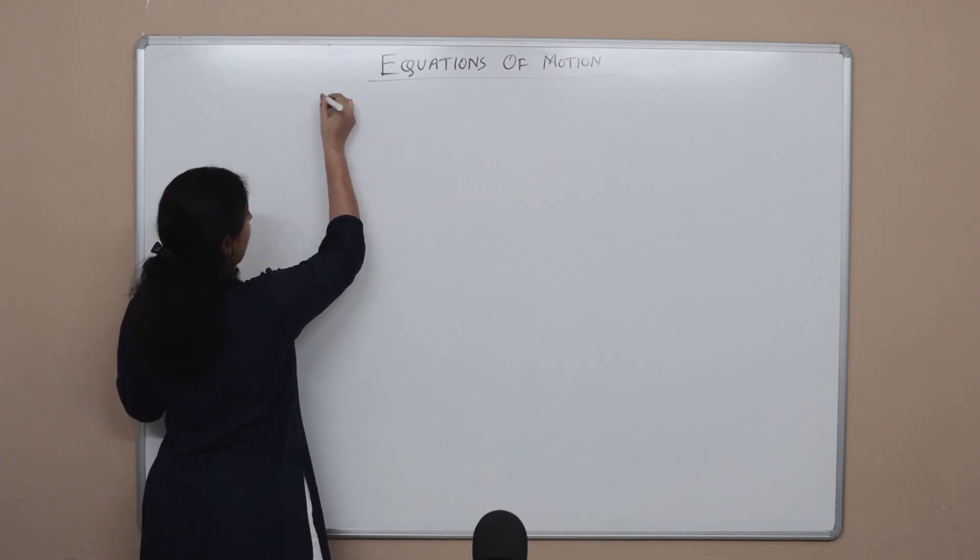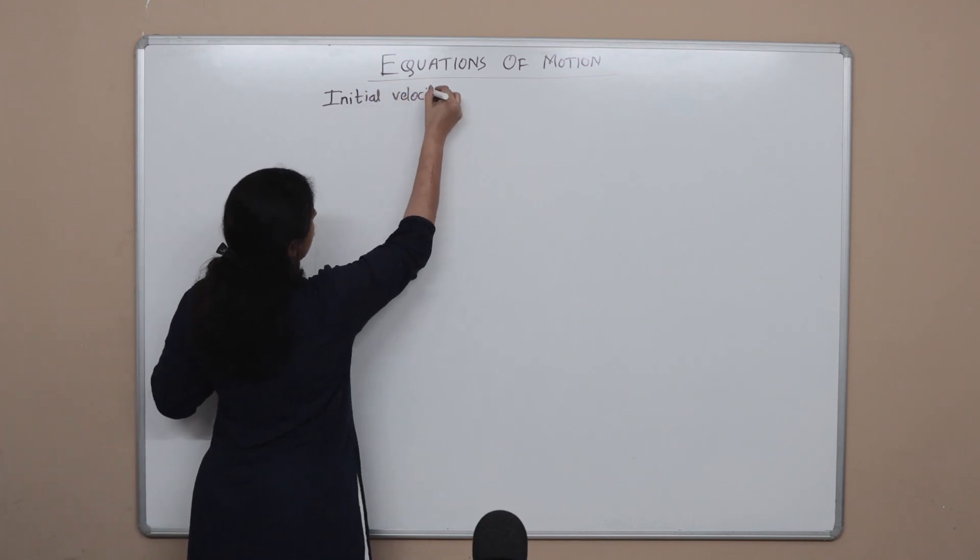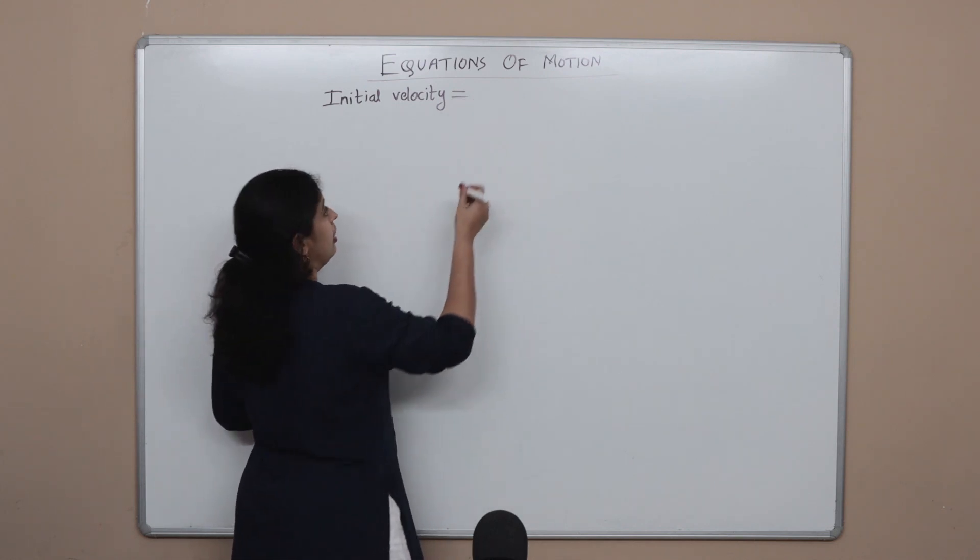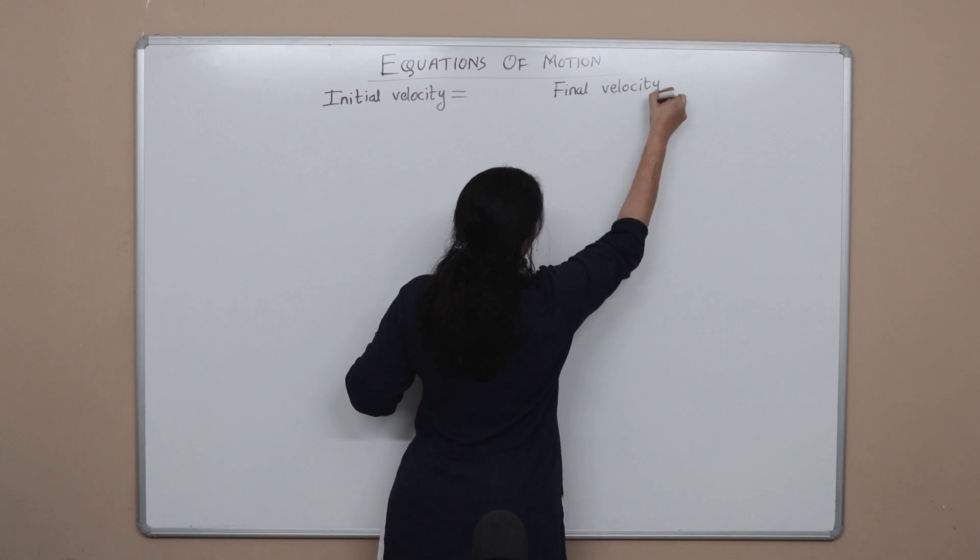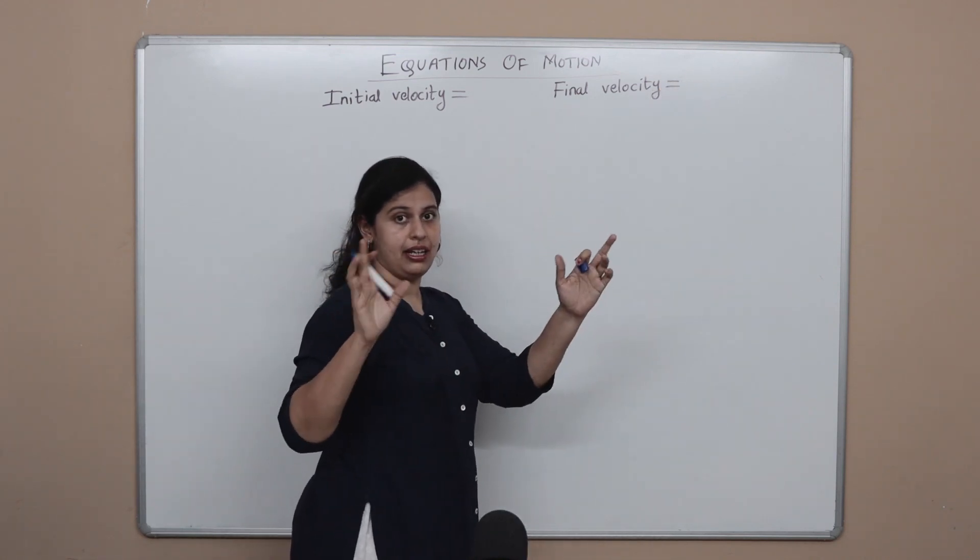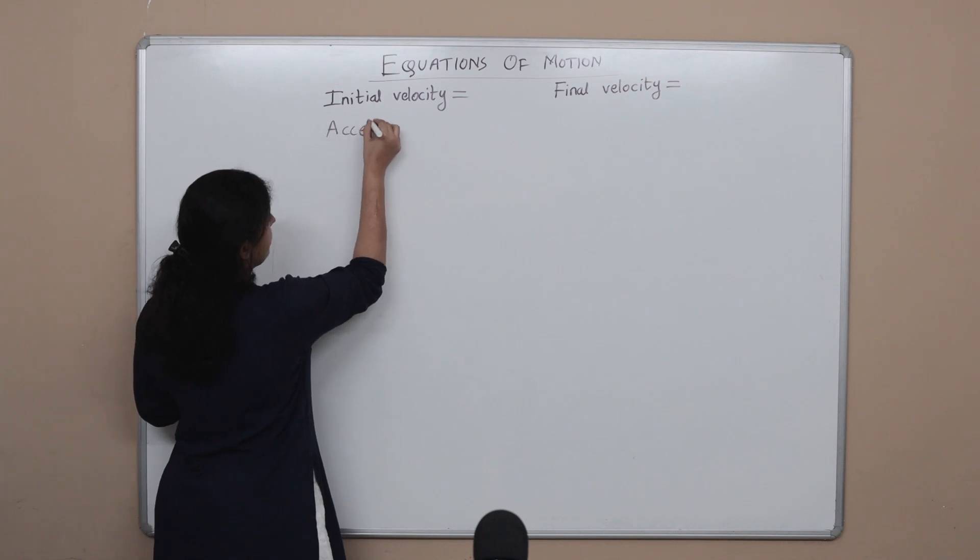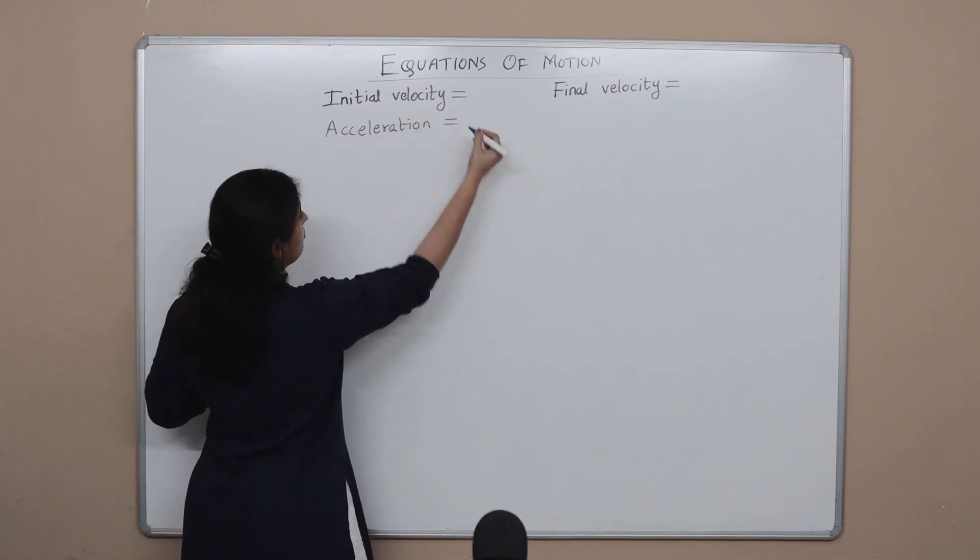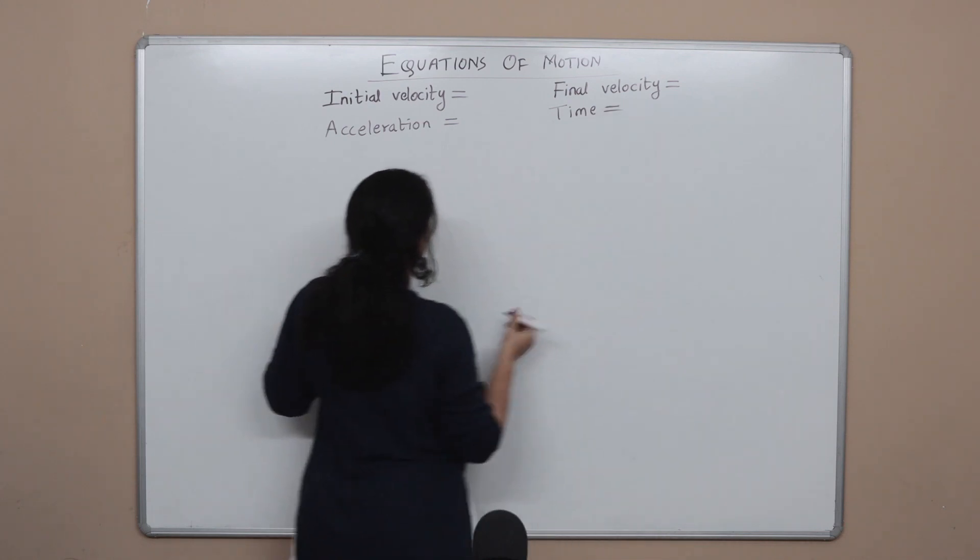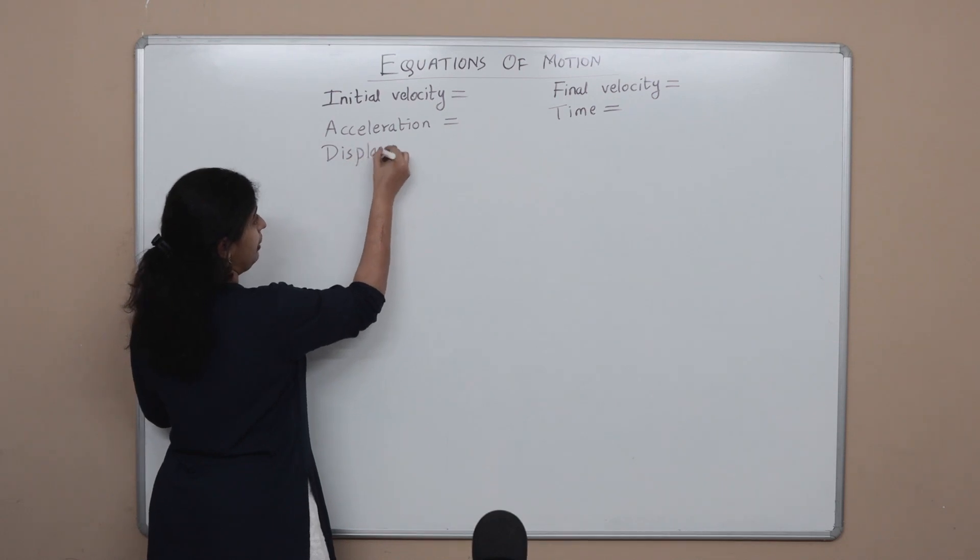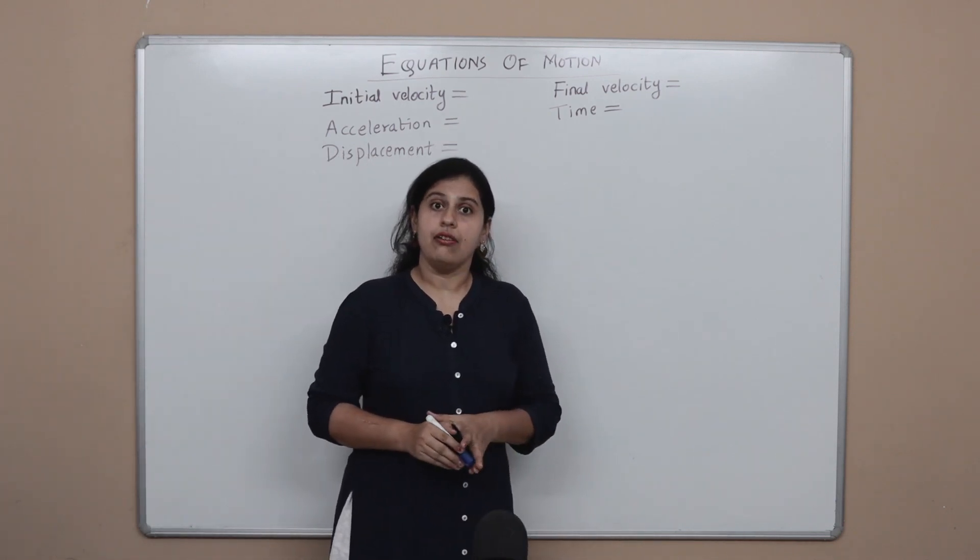So the first velocity is known as the initial velocity, the velocity at which the object started moving. The next velocity is called the final velocity, the velocity that the object finally had in the time period that we are going to consider. If there is a change in velocity, there is also going to be a term called acceleration. Since this happens over a period of time, we also have time, and finally since it's moving there is obviously going to be displacement.